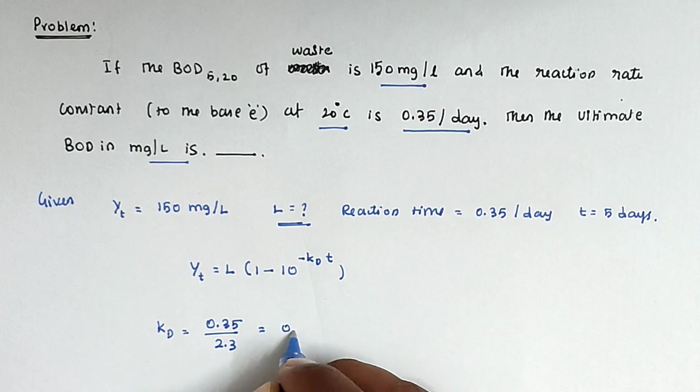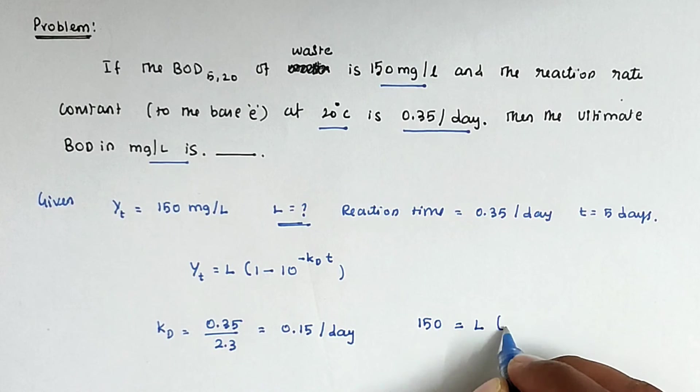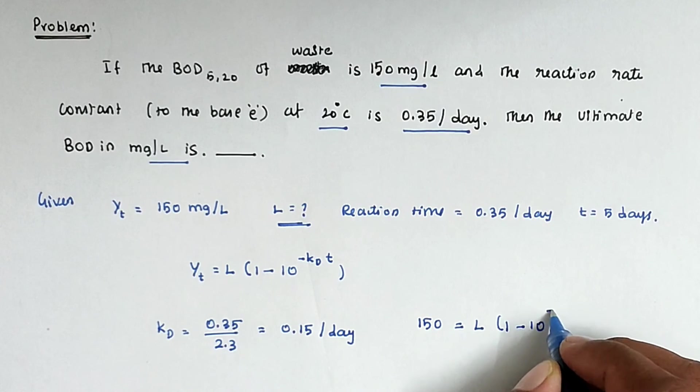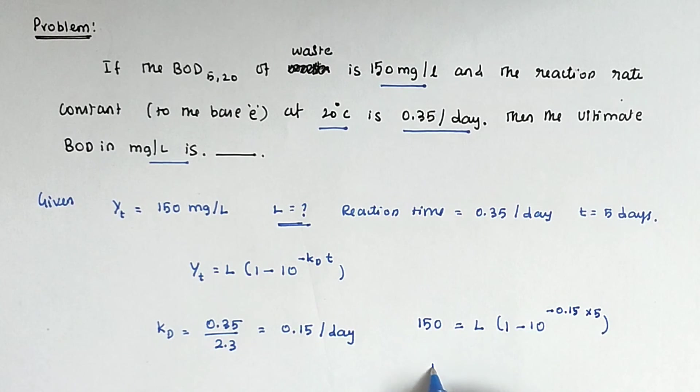We can substitute all the values. Y_T is 150 milligrams per liter. So 150 equals L times 1 minus 10 to the power of minus 0.15 times 5. Solving this, we get the value of L equal to 182.4 milligrams per liter.